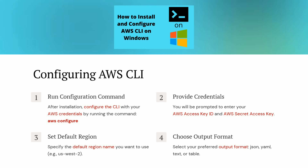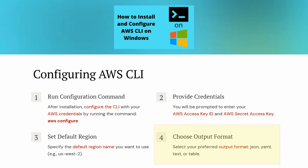Next, we will see how to configure AWS CLI. After installation, configure the CLI with your AWS credentials by running the 'aws configure' command. It will ask for your AWS Access Key ID and AWS Secret Access Key. Then you have to set the default region name. Then you have to choose the output format — output format can be JSON, YAML, text, or table.